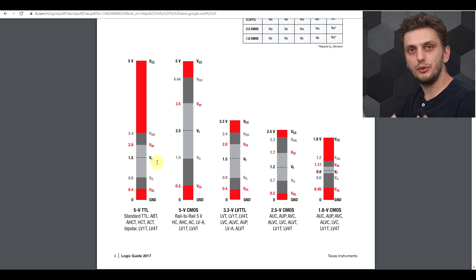If for whatever reason you have any sort of glitches that take you into the gray zone, that might be interpreted as a bit that you don't really want to see. So let's see how this would occur in a real circuit.